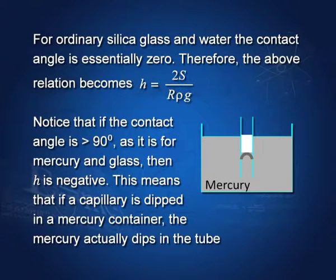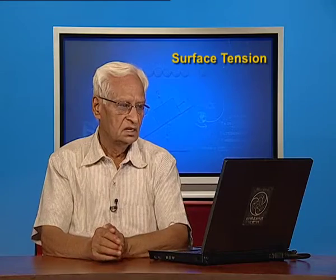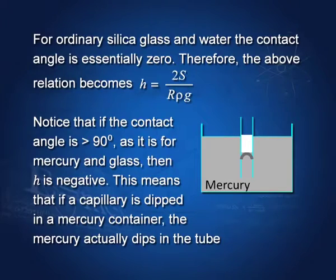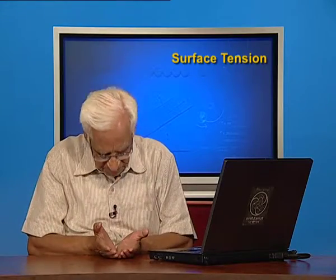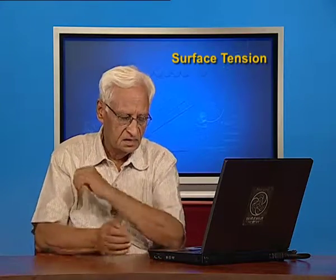For ordinary silica glass and water, the contact angle is essentially 0, so cos θ ≈ 1, and the formula simplifies to h = 2S/(r·ρ·g). Notice that if the contact angle is greater than 90 degrees, then h becomes negative — meaning instead of the liquid rising, the liquid gets depressed and goes down inside the tube, as happens with mercury.